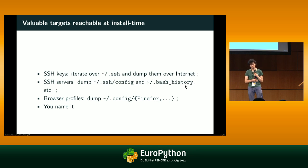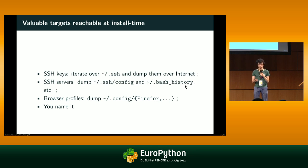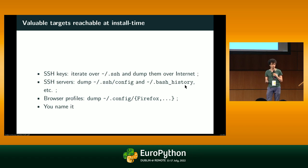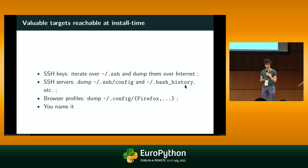The computer we carry contains very important data, and some people try to enforce encrypting your computer to prevent data loss and catastrophic failures. We can extend these ideas to servers and deployments — it's kind of the same except you replace human interaction with automation. Valuable targets reachable at install time include SSH keys, SSH servers, browser profiles, and more.